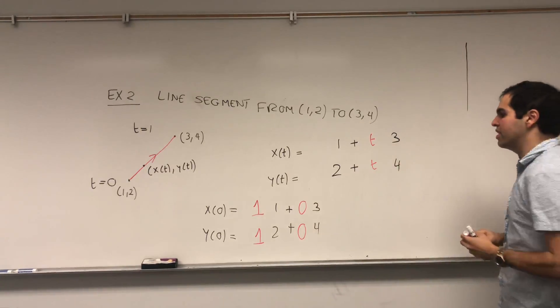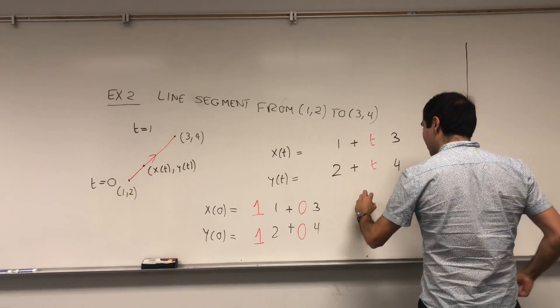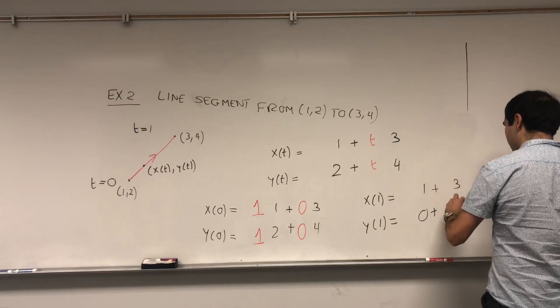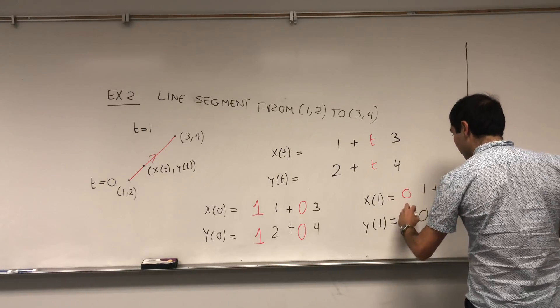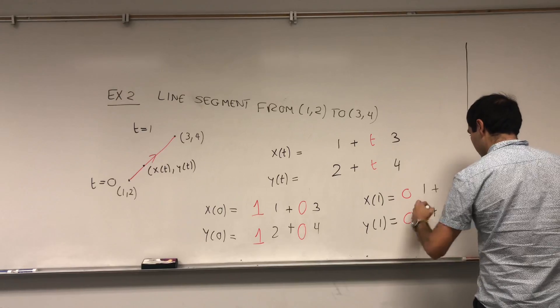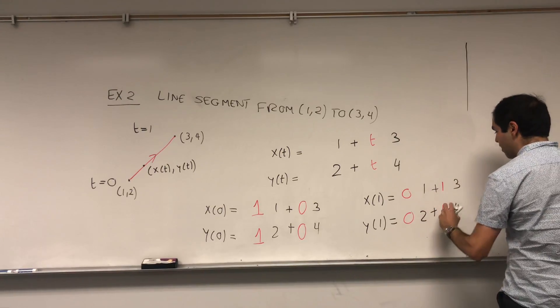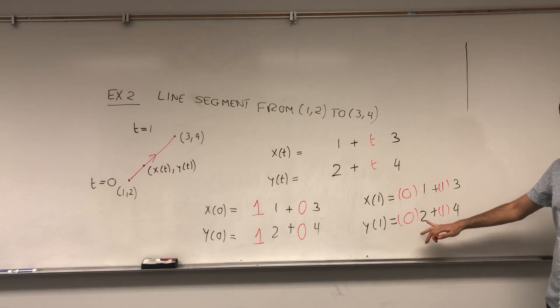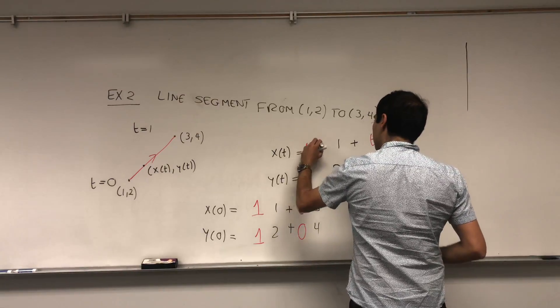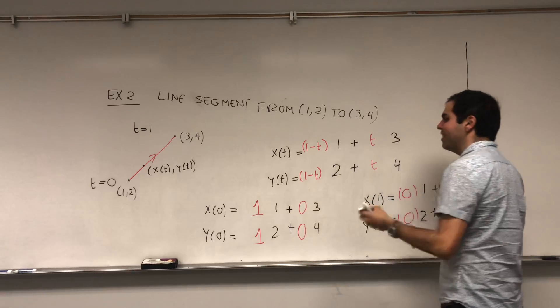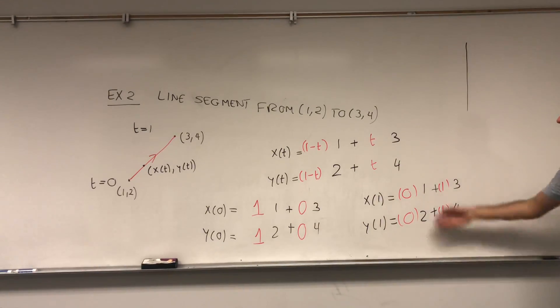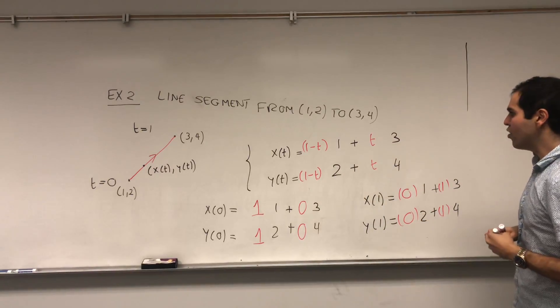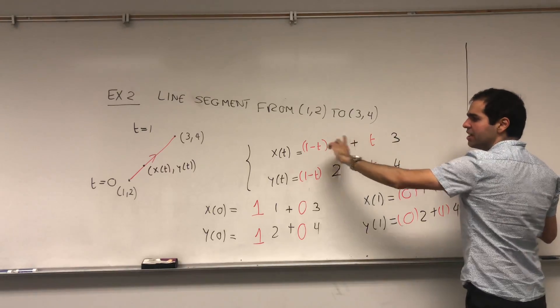Because it is precisely 0 at 0. On the other hand, you want, again, the opposite at 1, so you want x of 1 and y of 1 to be 3 and 4, which is precisely 0 times 1 and 0 times 2, plus 1 times 3 and 1 times 4. So now you want something that is 0 at 1, so how about we use 1 minus t? And by the way, 1 minus t and not t minus 1, because t minus 1 is negative. We want something positive, and in fact, that is the correct parametrization. Something times 1 and 2, and something times 3 and 4. To have an on and off switch, we have a t here and a 1 minus t here.